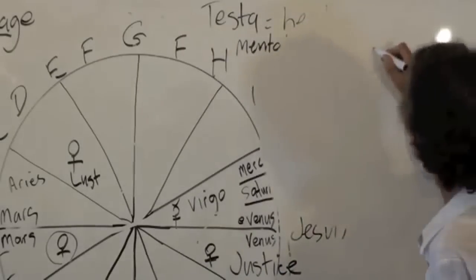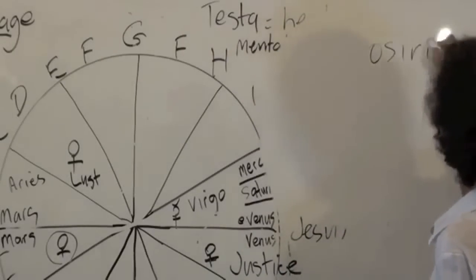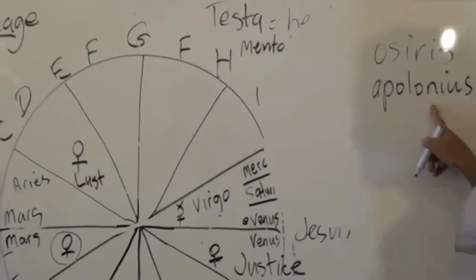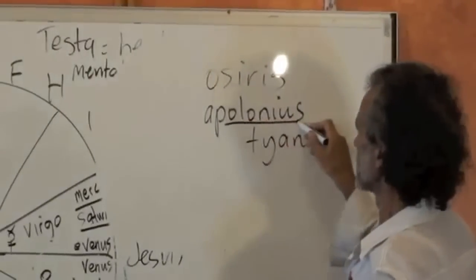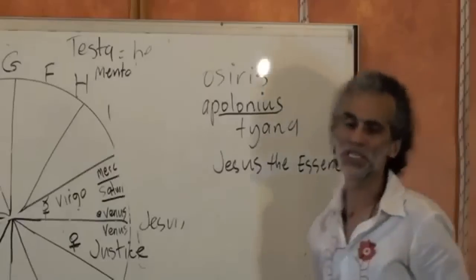The Egyptian Osiris, Apollonius of Tyana - now forgive me if that spelling is wrong - and Jesus the Essene.